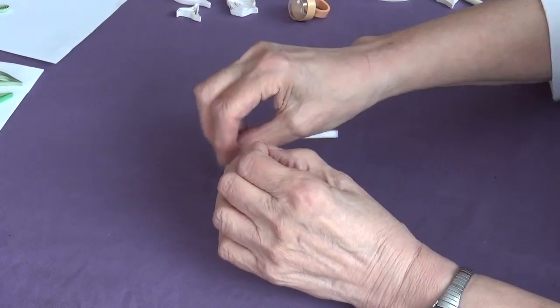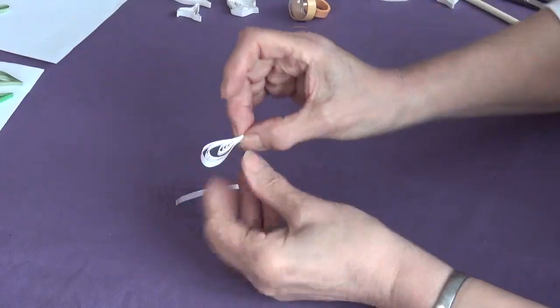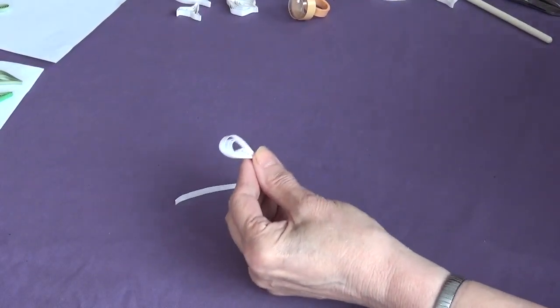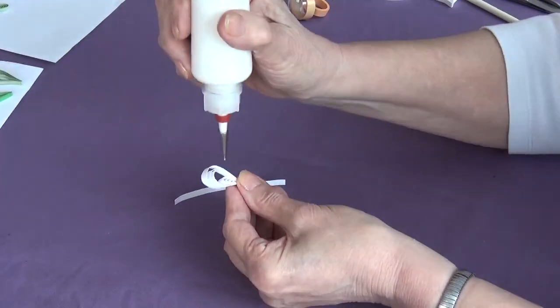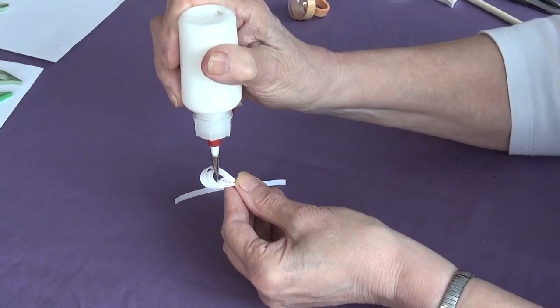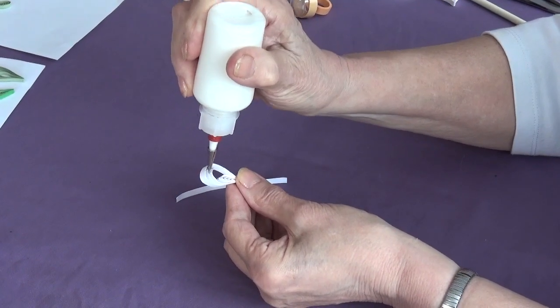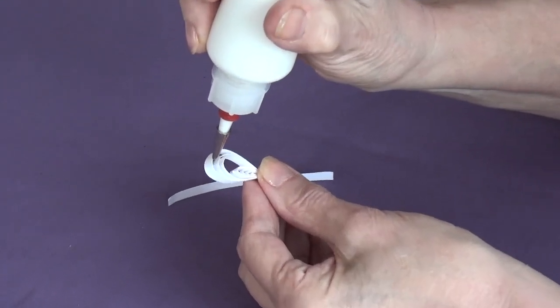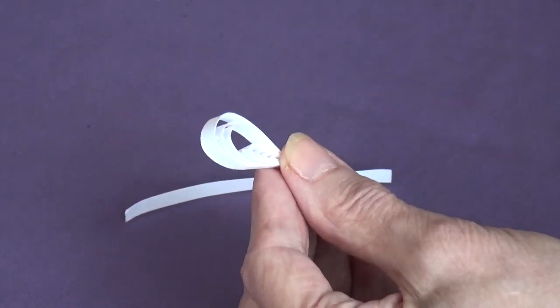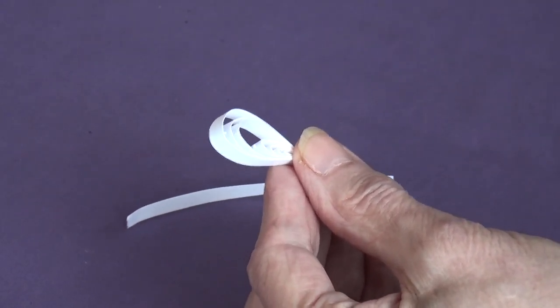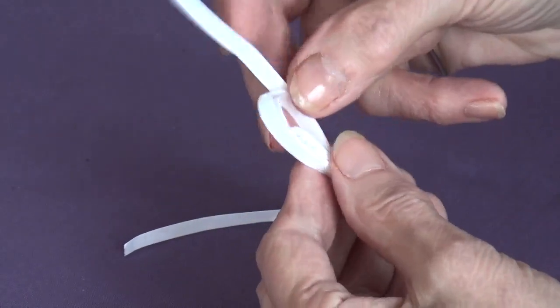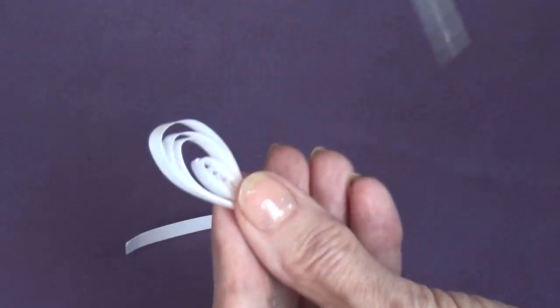Okay. They're all glued nice and firmly. And then I'm going to put a tiny spot of glue on the ends of these loops. So a little one there. One there. One here. And then get my tweezers and, oh, sorry about that.